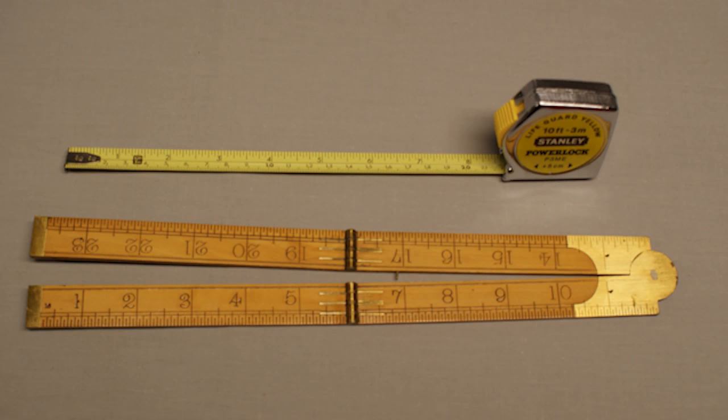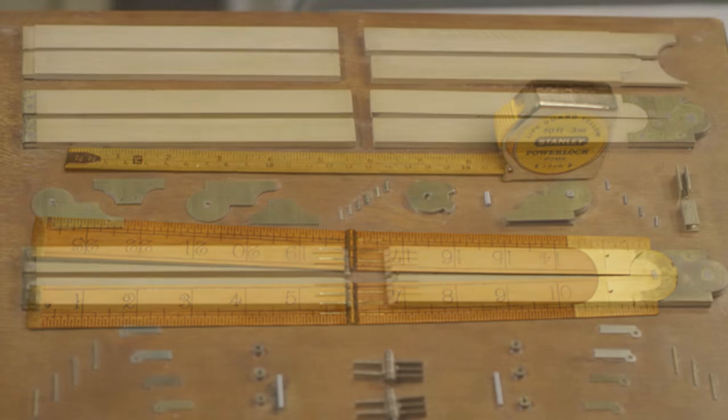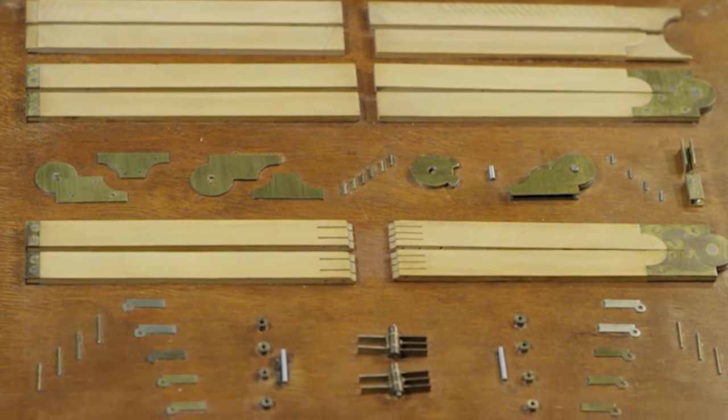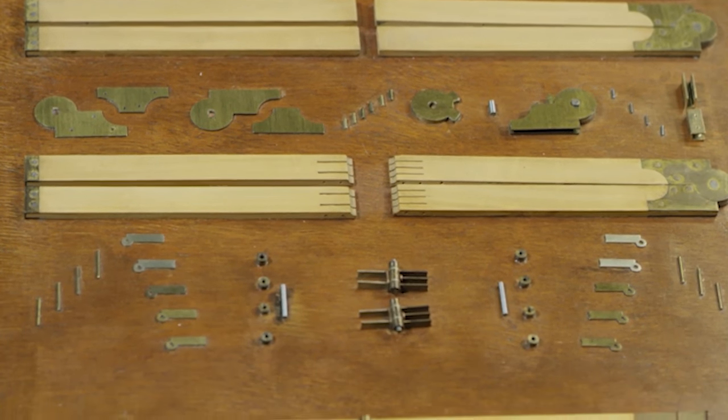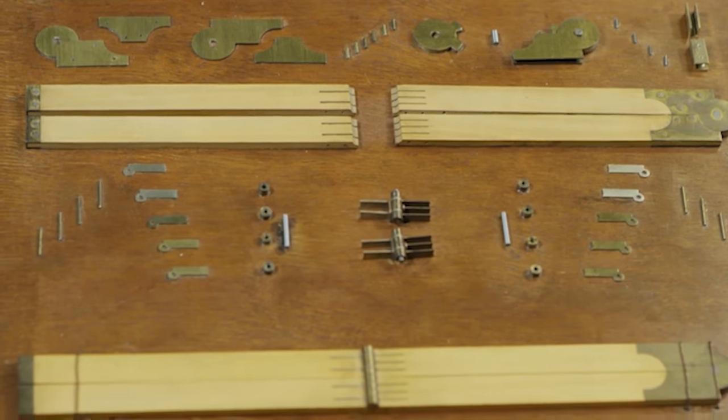This film explains the main processes involved in making the two-foot four-fold boxwood rule, which was widely used before steel tapes were available.